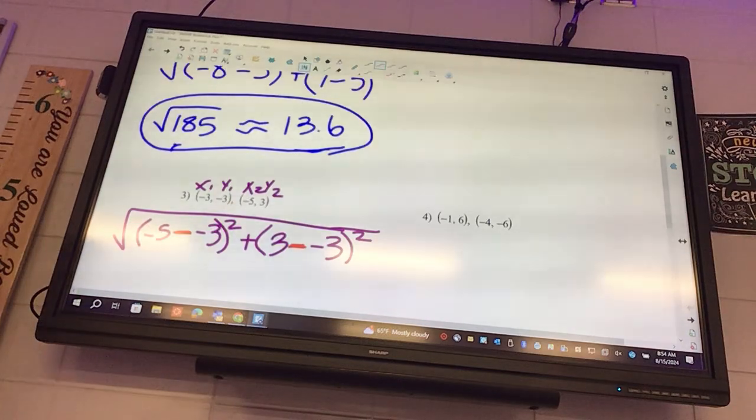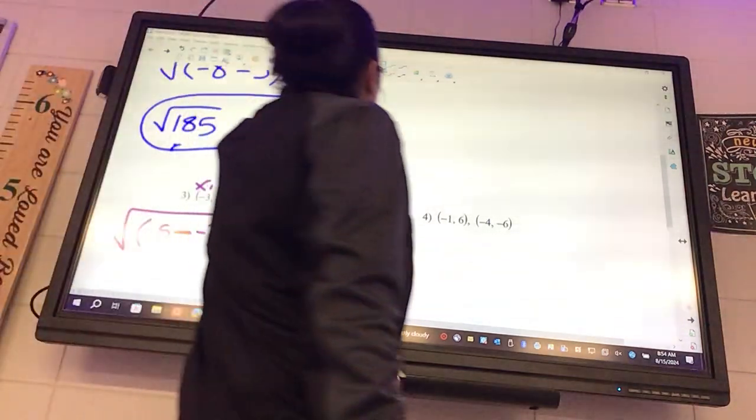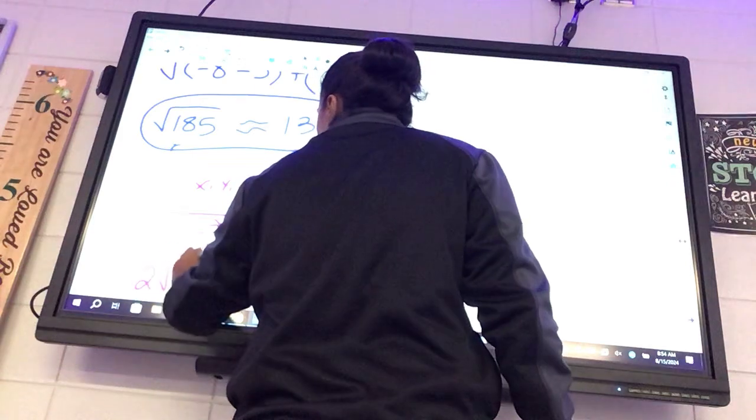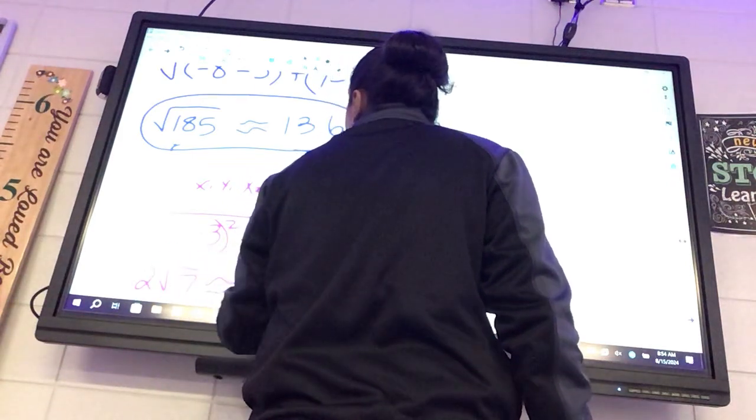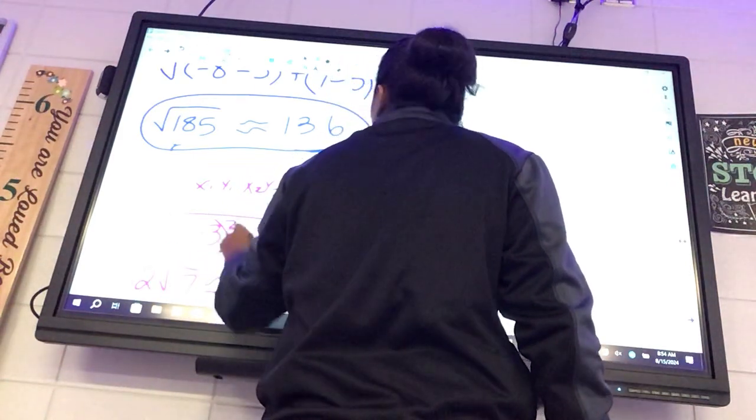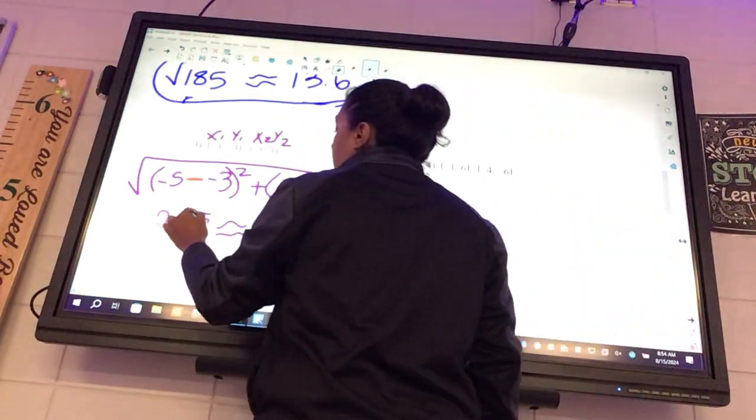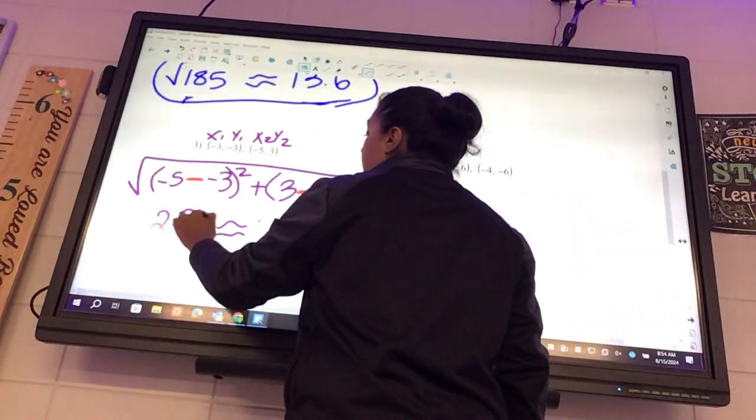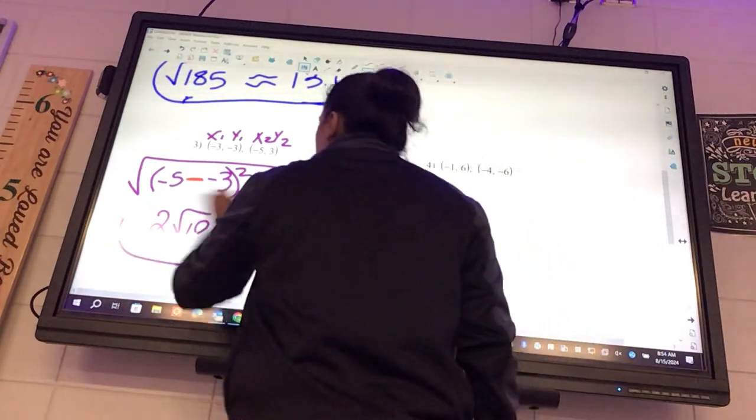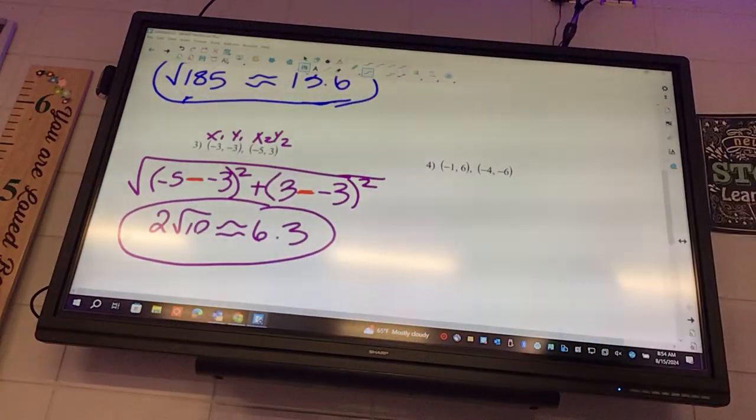What do you guys get for that one? Two radical, two radical seven. Two radical seven. And what is our approximate? It's 10, not 7. Two radical 10? Two radical 10. And then it's 6.3. Okay. Oh, so sorry.